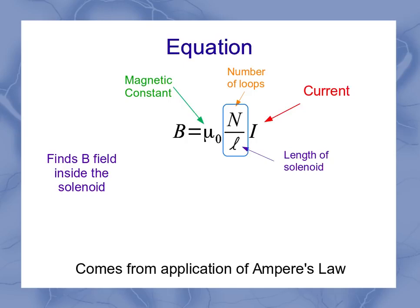This quantity, N over L, is sometimes given as a single thing, the turns per length, or the loops per length of wire.